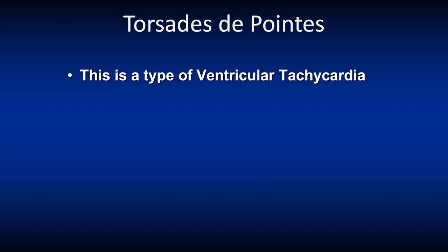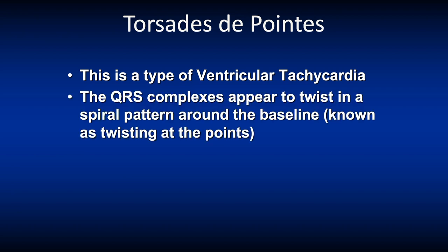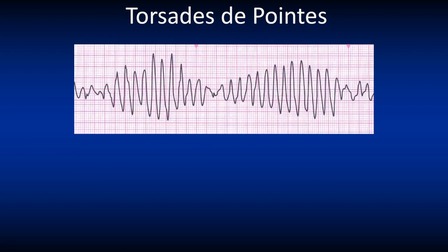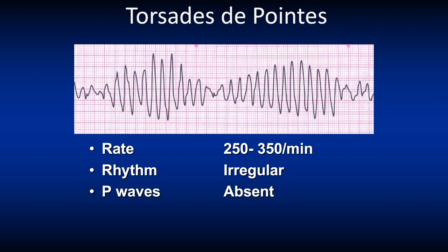Let's review another type of polymorphic ventricular tachycardia called torsades de pointes. The QRS complex appears to twist in a spiral pattern around the baseline — in French it means 'twisting at the points.' The rate is variable at 250 to 350 and the outline of torsades looks like a twisted ribbon. The rhythm is irregular, P waves are absent, there is no PR interval, and the QRS complex is wide.